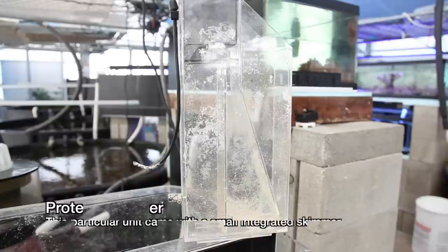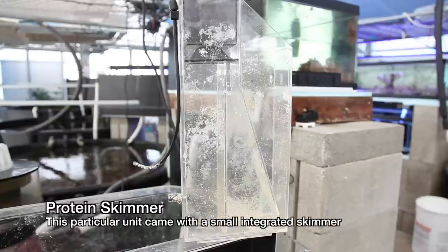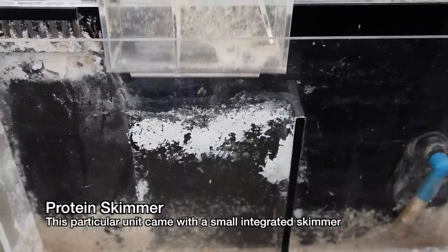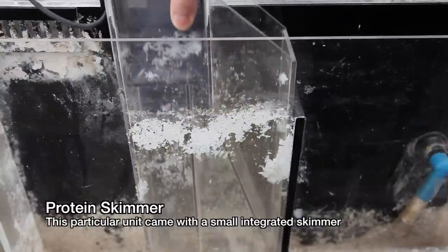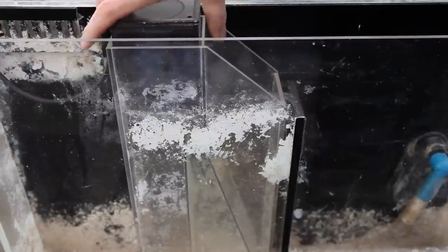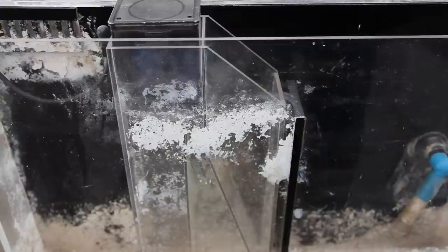This particular aquarium setup had an integrated protein skimmer. I'm a big proponent of protein skimmers even on small aquariums like this. This skimmer may be operated as a venturi using the gray airline hose, or possibly as an airstone skimmer with an air pump. Here, you can see how it might sit in the back partition.